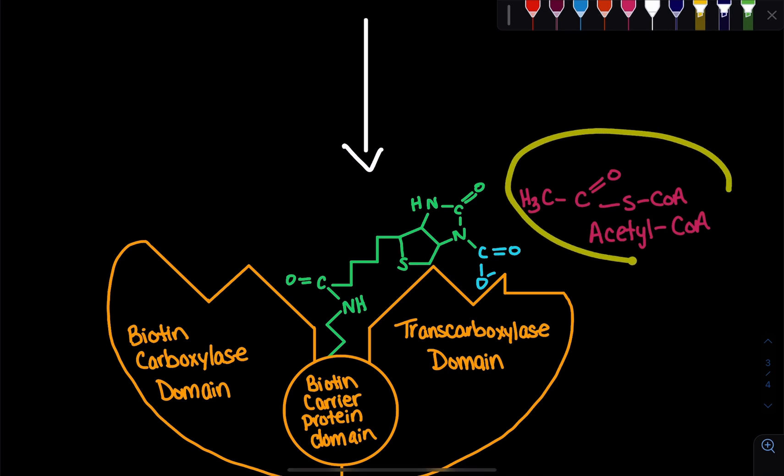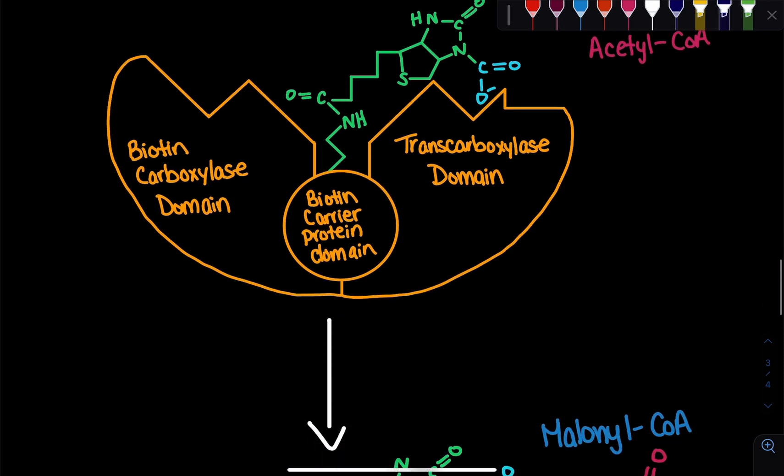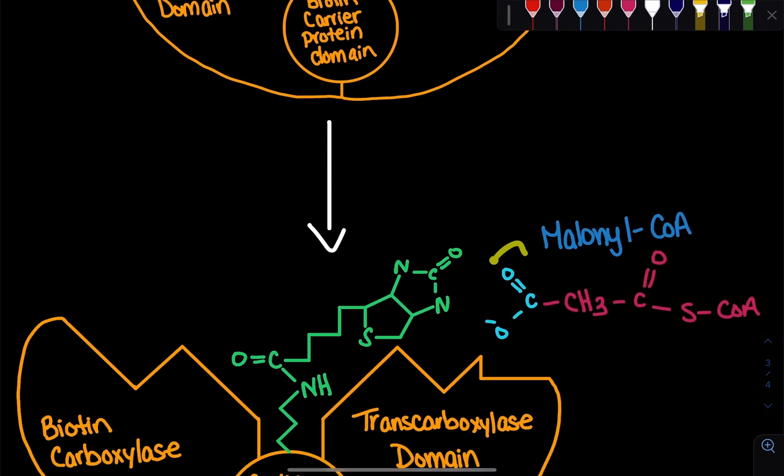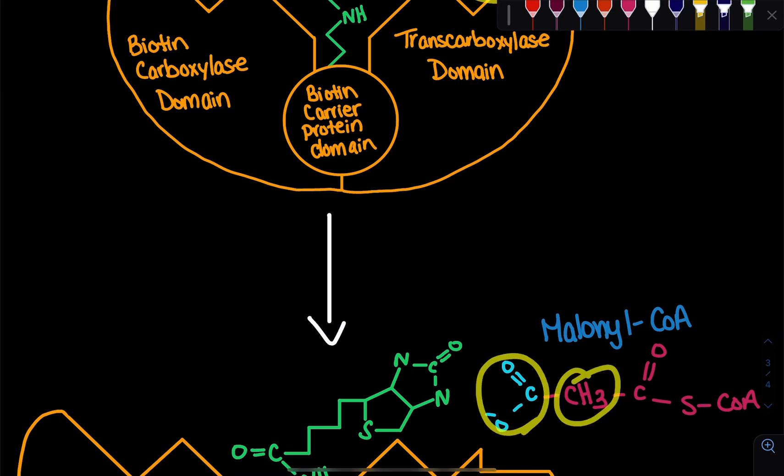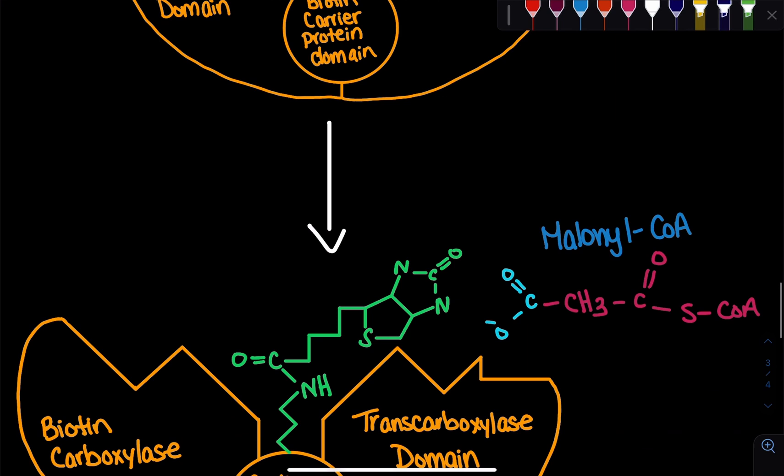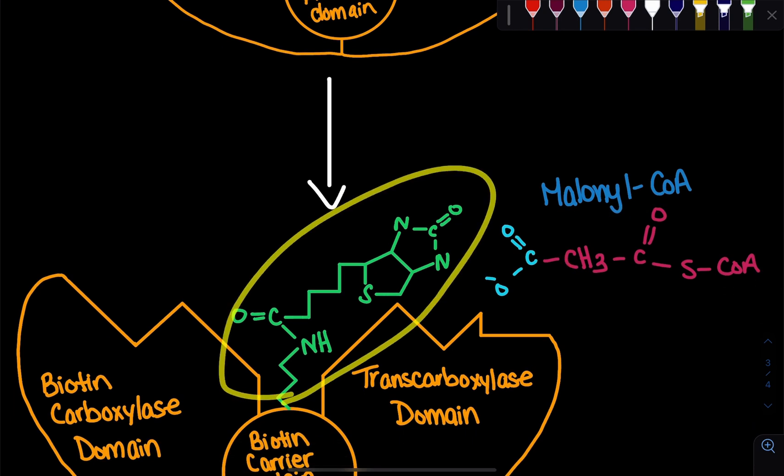Now here we can see we have acetyl-CoA right over here. It's a two-carbon molecule, so we have a carbon double bound to an oxygen, and we have a coenzyme A group and a methyl group. When this carbon dioxide is going to bind to that acetyl-CoA, we will get the product malonyl-CoA. You can see this carboxylate group form over here at the end. This group essentially gets added to this carbon, and now we've formed malonyl-CoA. The only difference between acetyl-CoA and malonyl-CoA is that if we just add a carboxylate group to acetyl-CoA, we get malonyl-CoA, and then we regenerate our biotin.